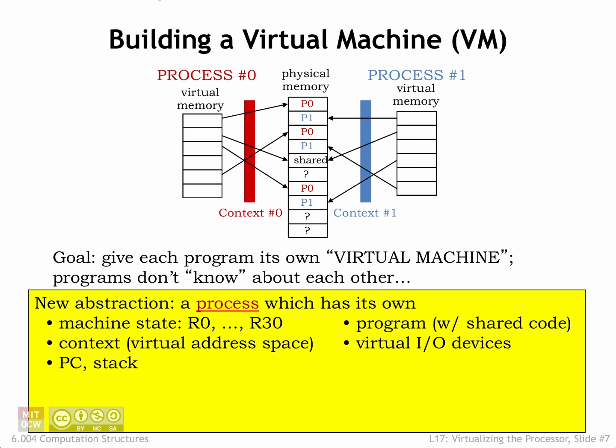Each process has a state that captures everything we know about its execution. The process state includes the hardware state of the CPU — the values in the registers and program counter — and the contents of the process's virtual address space, including code, data values, the stack, and data objects dynamically allocated from the heap.